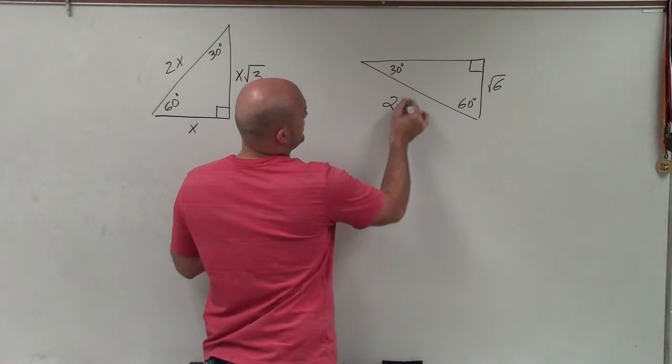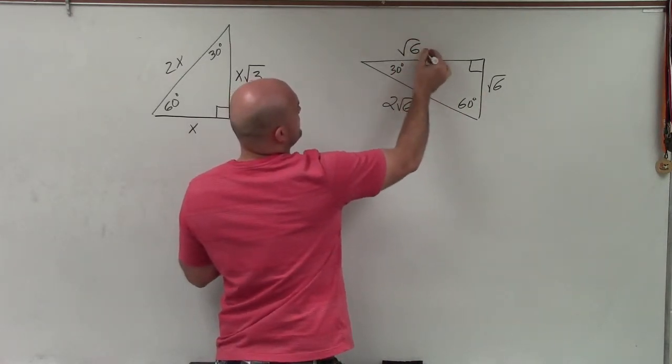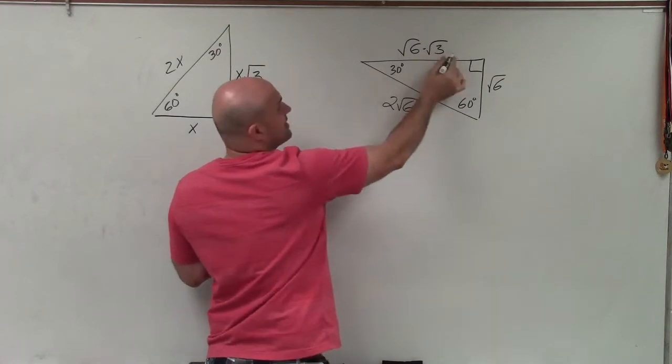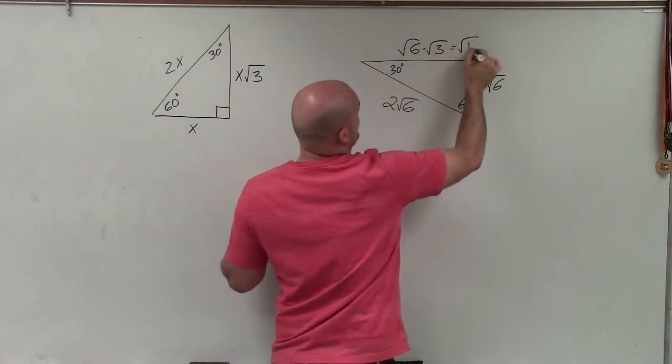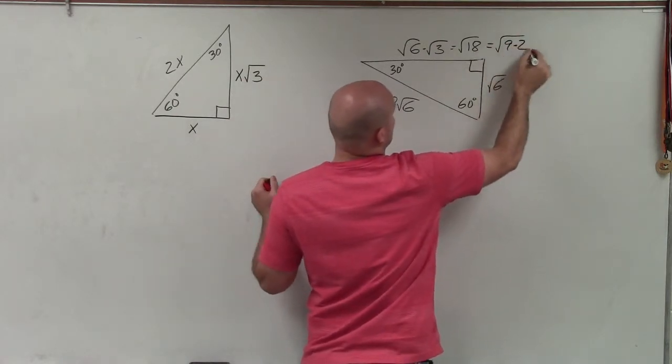So I just need to multiply 2 times the square root of 6. To find the long leg, I must take my square root of 6 times the square root of 3. Now I can multiply those to give me the square root of 18, which I can simplify as the square root of 9 times 2.